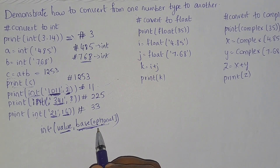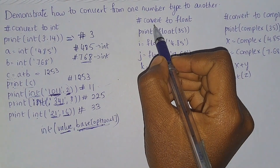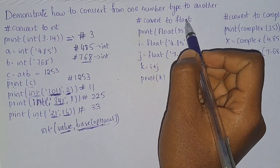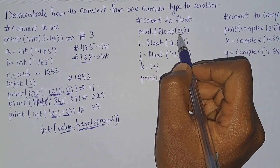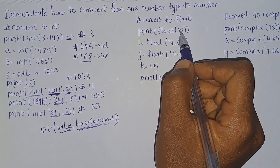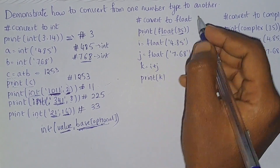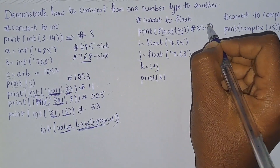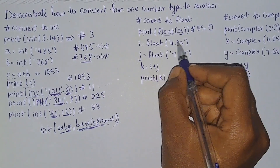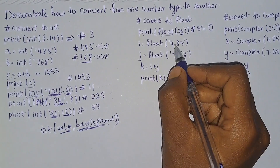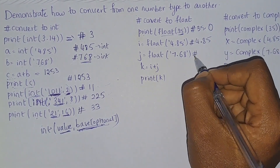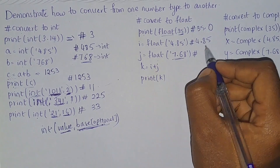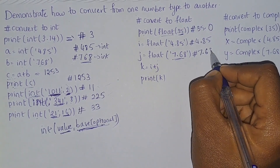The base is optional — if you don't provide any base it will be considered decimal. Now coming to conversion to float: if you print float(35), this 35 is int type and it will result as 35.0. Converting the string '4.85' into float results in 4.85 as float. And converting the string '7.68' to float results in 7.68.